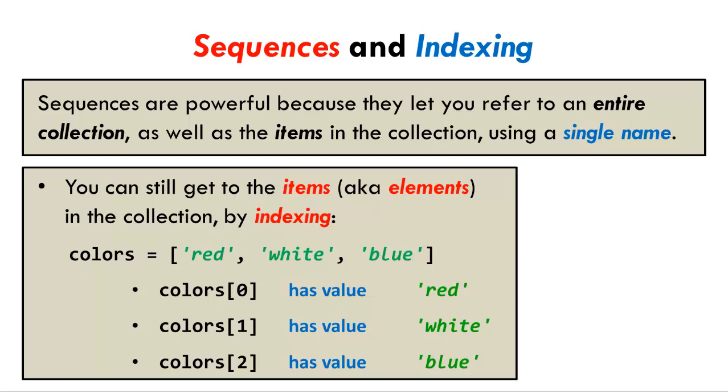Recall also that you can still get to the items of the collection by indexing, like this. Colors[0] refers to the beginning item of the sequence, here the string red. Colors[1] refers to the next item of the sequence, here the string white. And colors[2] refers to the item after that, here the string blue.